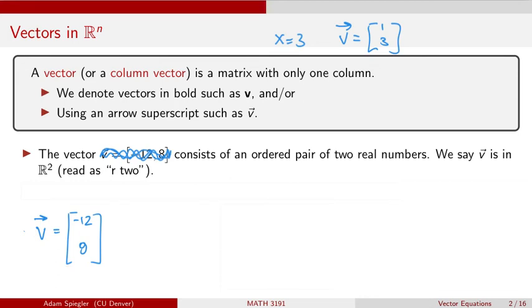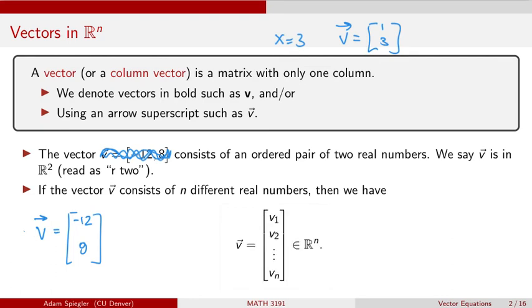We can have vectors of any dimension. Sometimes we want to describe not just east, west, north, south, but what is our altitude and various other variables that we might be interested in a problem. So oftentimes we'll be working with higher dimensional vectors. We still write them out the same way. They just might consist of more values.